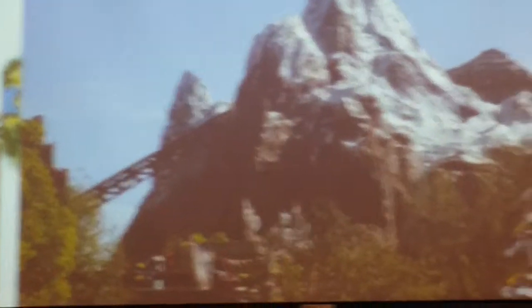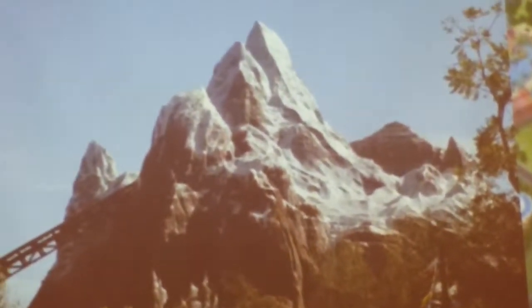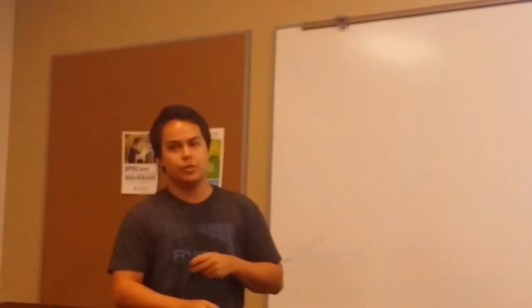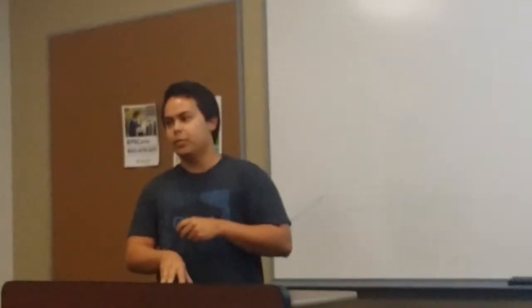If you go on the Wild Africa Trek, it gets you up close to the animals. They say you want to ride it twice — sit on the left side first to see everything on the left, then go again and sit on the right side. Expedition Everest is a landscape set in Asia. The attraction features a two-way track that goes forwards and backwards as the mystical Yeti attacks your ride when you're going through the Forbidden Forest.